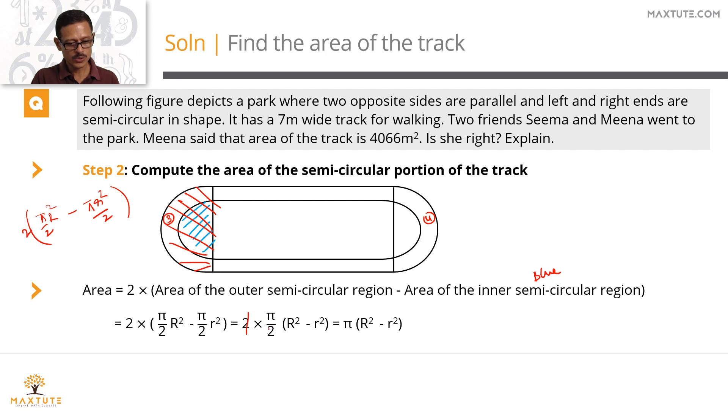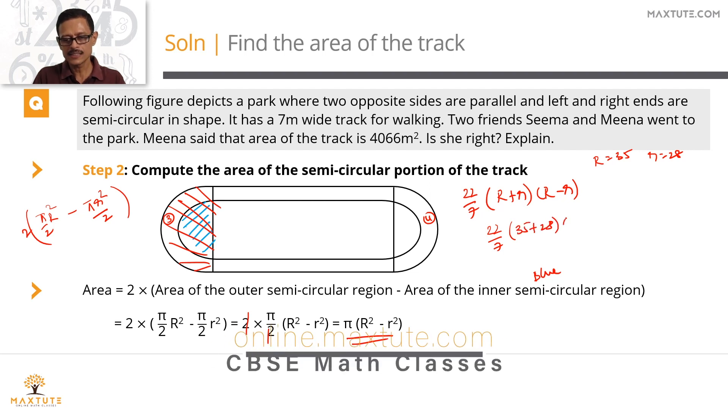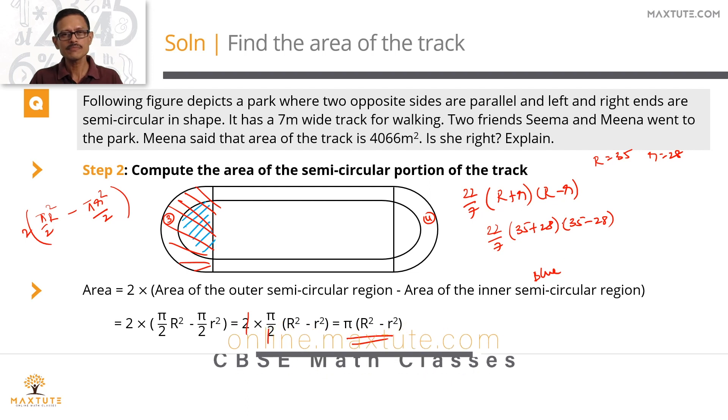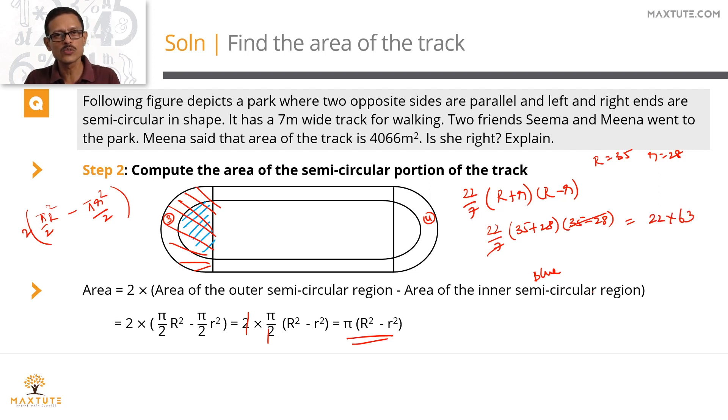So the outer semicircular area is πR²/2. Inner one is πr²/2. Take the π/2 common outside. These two get cancelled. So what we are left with as area of the walking track in regions 3 and 4, add up to π times R² minus r². So let's write it as 22/7 into (R + r) times (R - r). What is capital R? Capital R is 35. Small r is equal to 28. Let's plug in both these values. 22/7 into (35 + 28) times (35 - 28). 35 minus 28 is actually 7. So the 7 gets cancelled with this number to leave us with an answer, which is 22 times 63. 63 into 2 is 126. So 22 into 63 is 1260 plus 126, which is 1386 meter square.